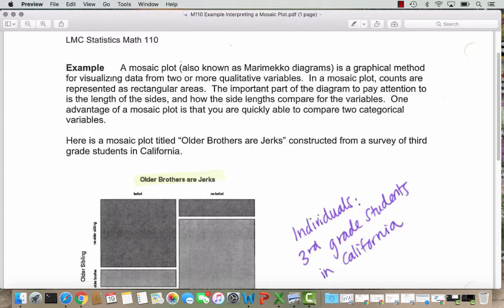In a mosaic plot, the counts are represented as rectangular areas. The important part of the diagram to pay attention to is the length of the sides and how the side lengths compare for the variables. One advantage of a mosaic plot is that you are quickly able to compare two categorical variables.